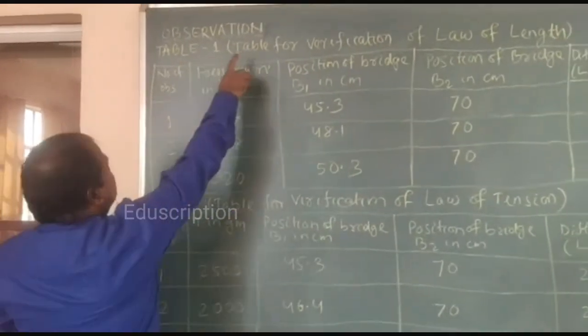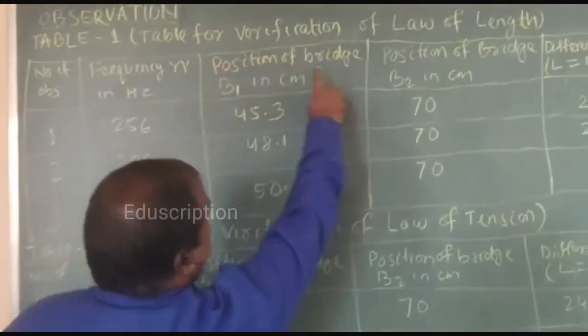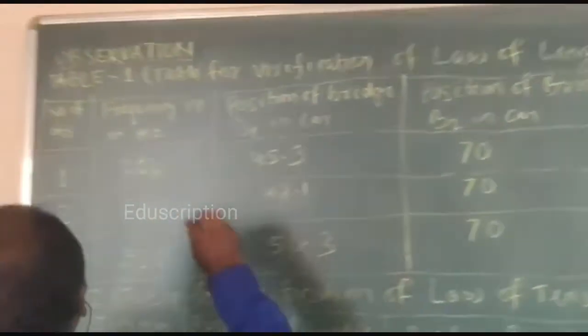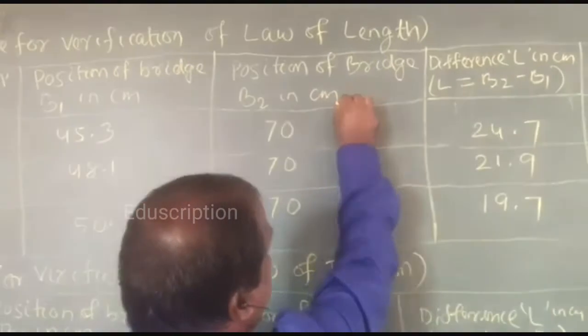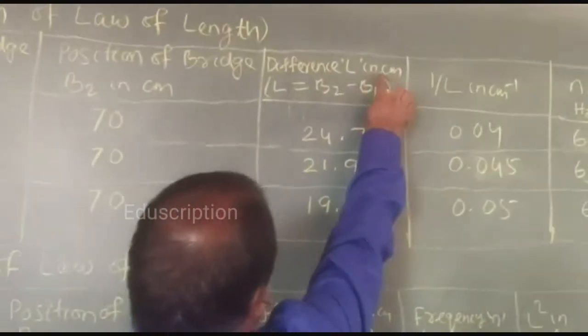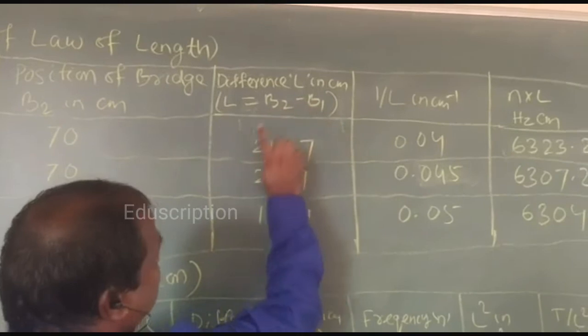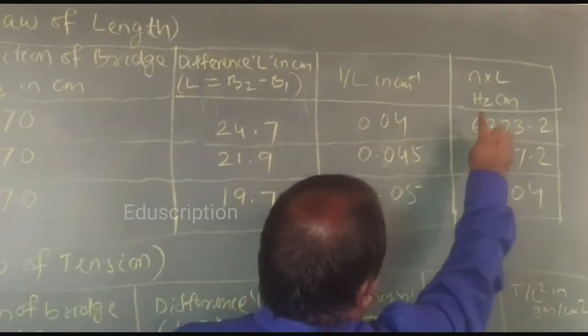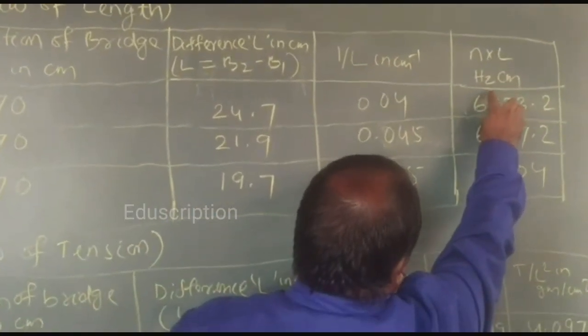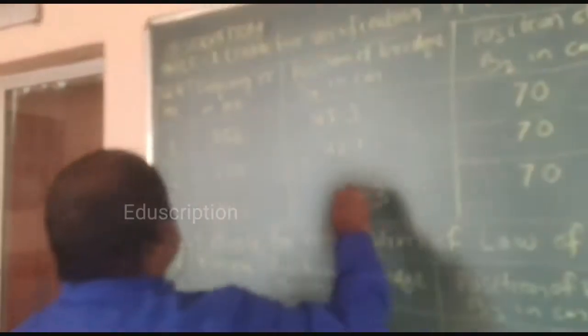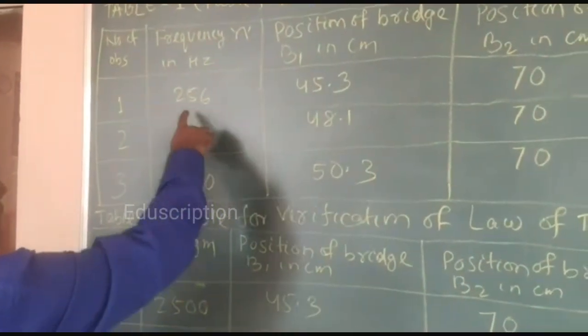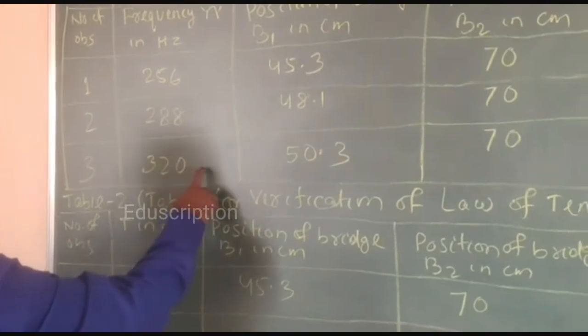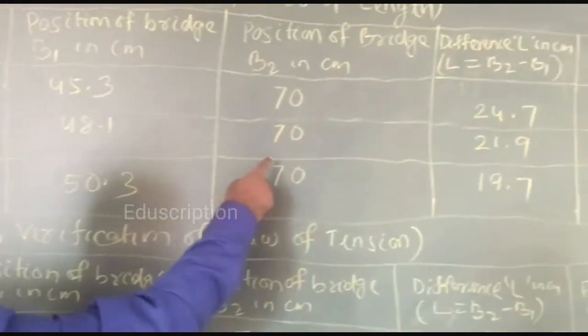See your observations. Table 1, that is table for verification of law of length. Number of observations, frequency in hertz, position of bridge B1 in centimeter, position of bridge B2 in centimeter, difference L in centimeter that is L equal to B2 minus B1, then 1 by L in inverse centimeter, and value of n into L in hertz per centimeter. We have to use three tuning forks, that is 256, 288 and 320. And these are the data we have found from your experiment.